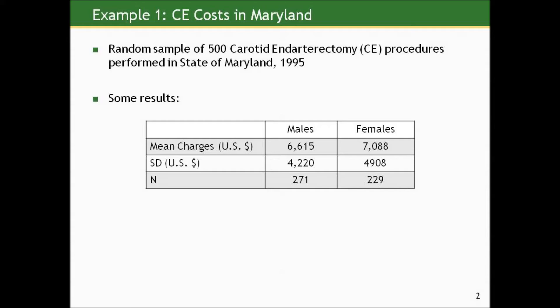Males on average paid $6,600 U.S. dollars, and females paid nearly $7,100 on average, with standard deviations given in U.S. dollars. There are about 270 males in this sample and about 230 females. And we might want to ask: is there evidence of a difference in the average cost for CE procedures between males and females in Maryland in 1995?